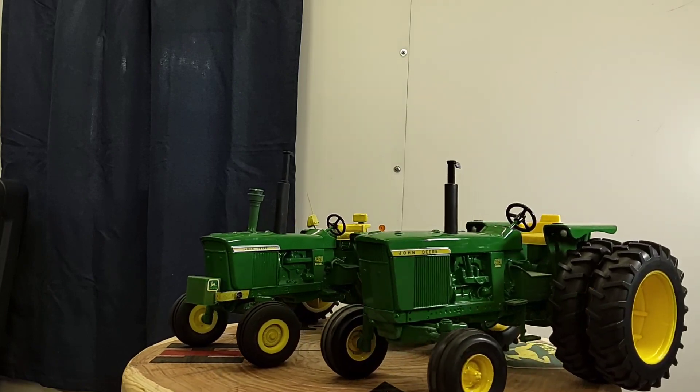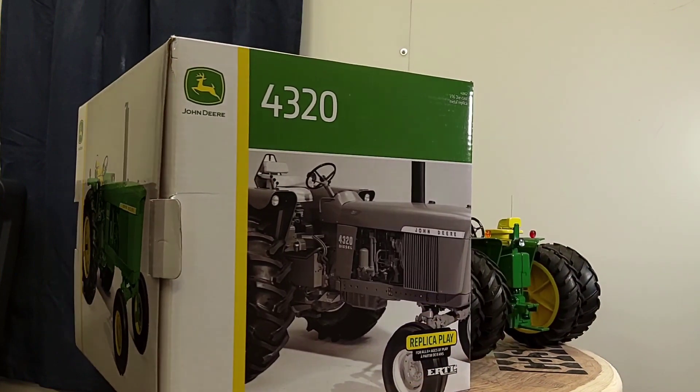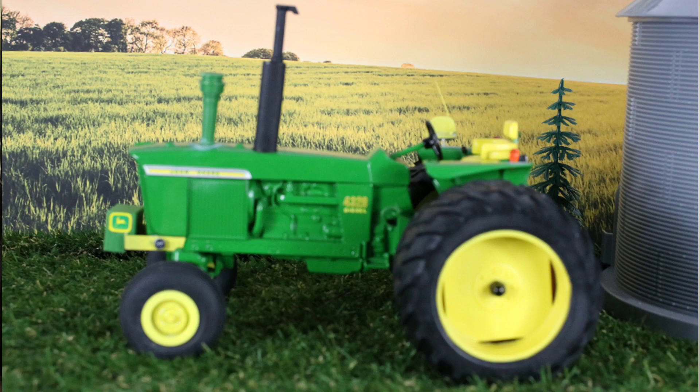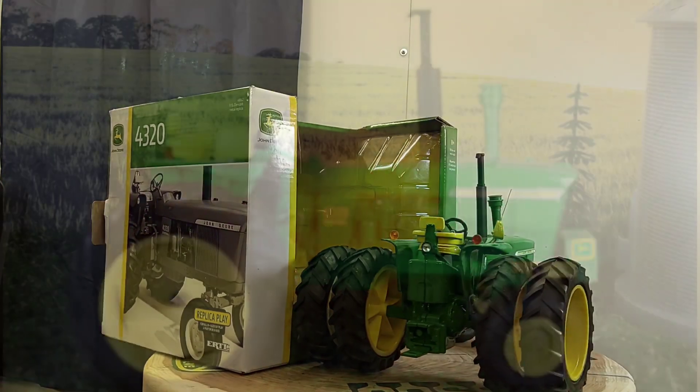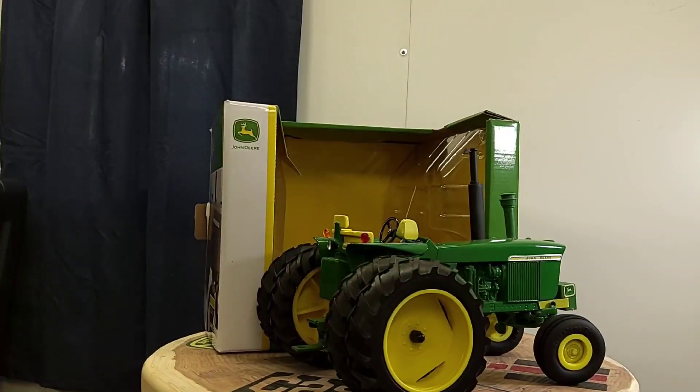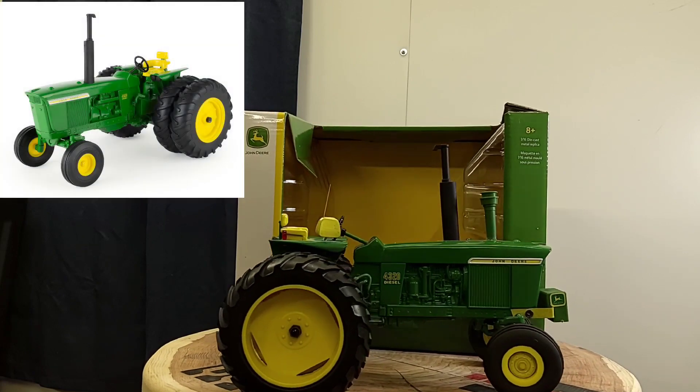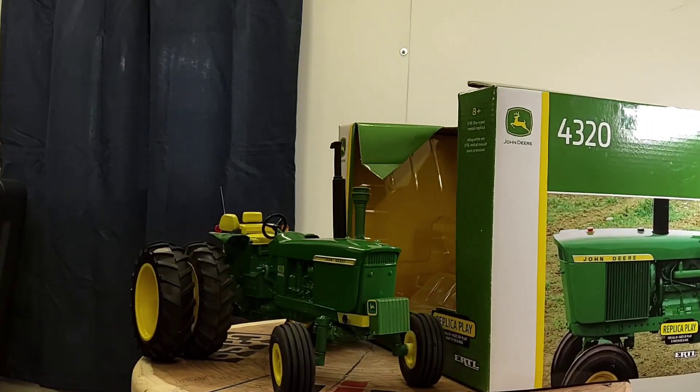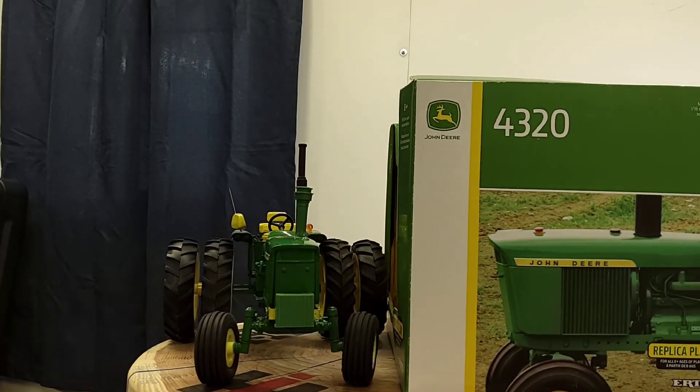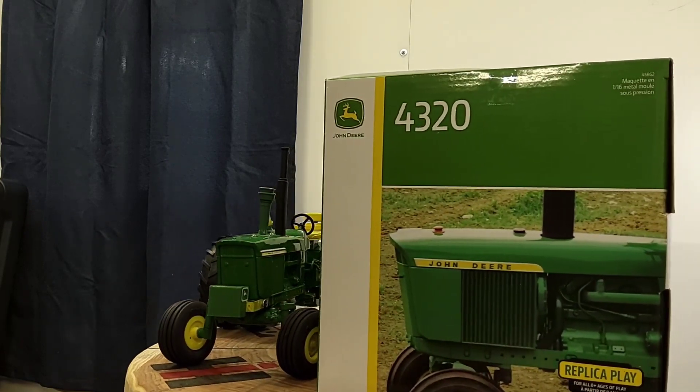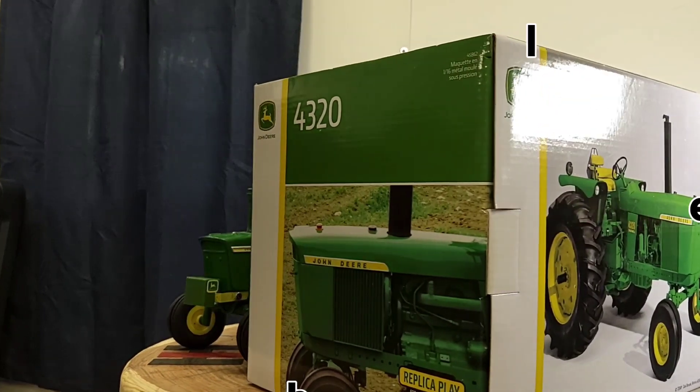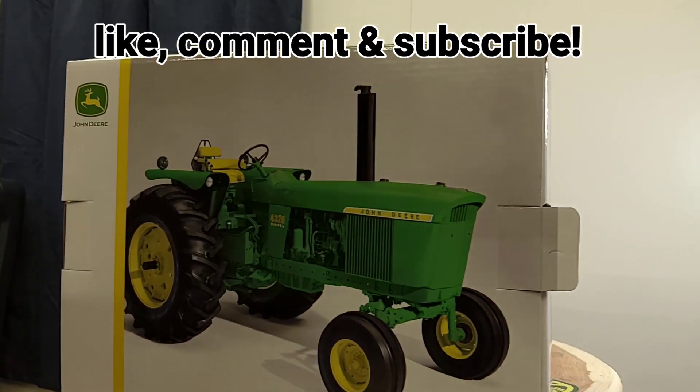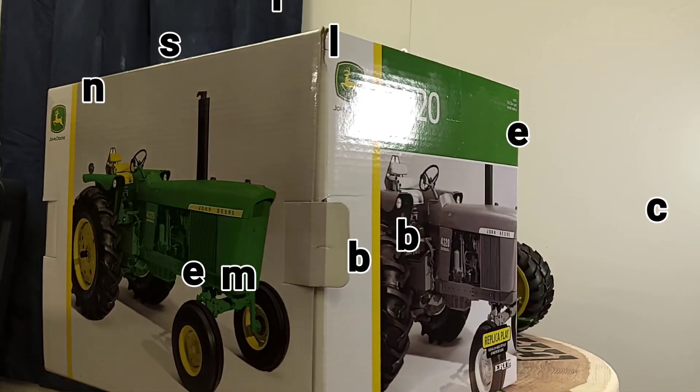All right everybody, I'll move on to some final thoughts. Ertl 1/16 scale John Deere 4320 from the replica play line, recent release. I got mine like three weeks ago. My brother, he seen them at the dealer and he lived like five minutes away. He went up there for me, I paid for it over the phone. It was on a Friday because I was going to his house on Saturday but I wasn't going to make it up there before the dealer closed. So he picked it up for me and I got it from him. I want to thank him for doing that. It's a pretty cool tractor, classic John Deere, first 100 horsepower tractor from John Deere. Like I said, if I'm wrong on that let me know. It's pretty classic for sure.